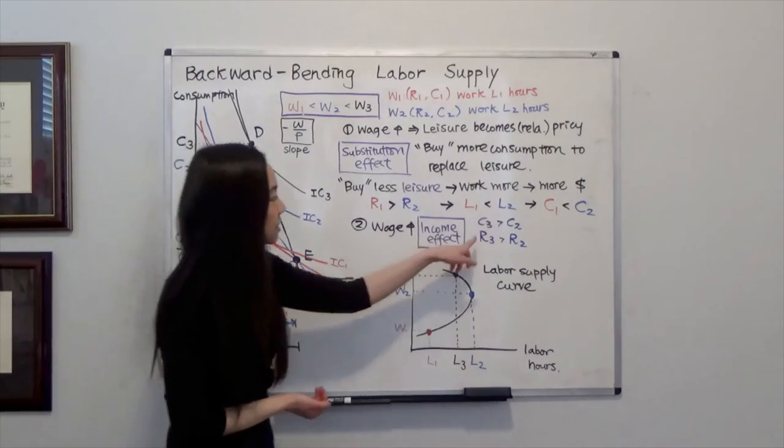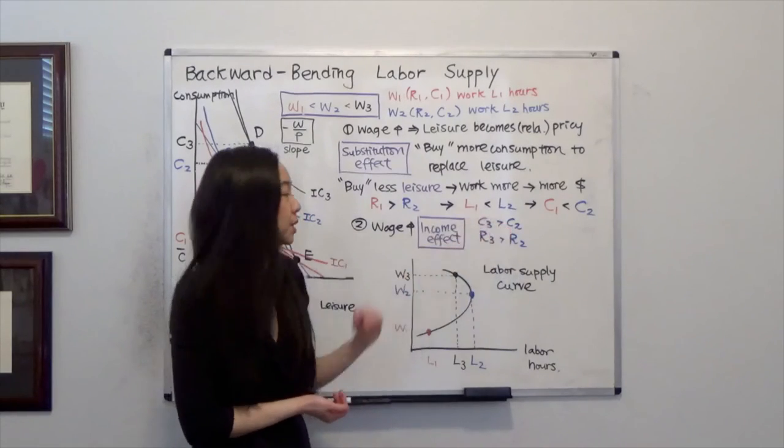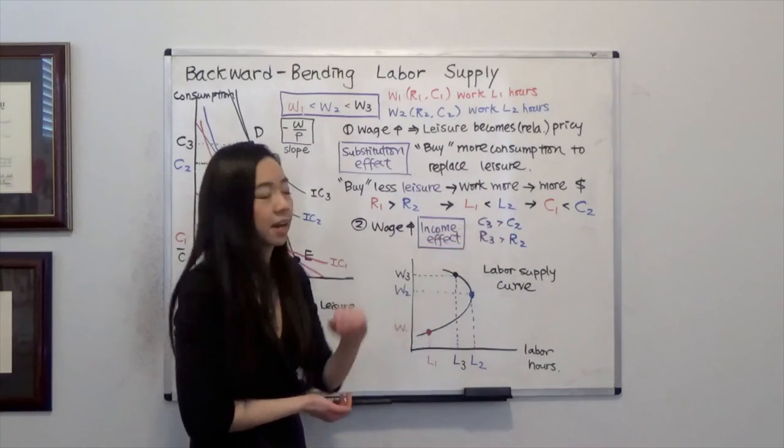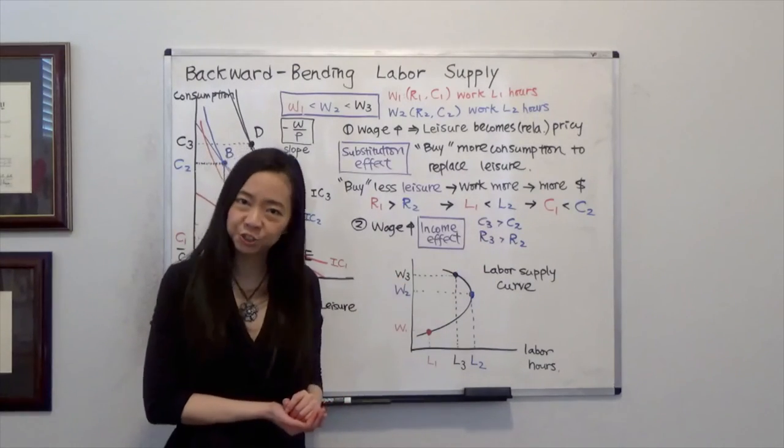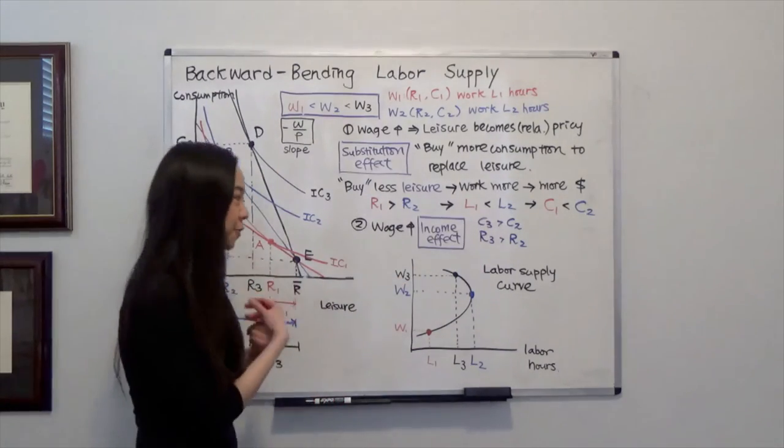So, you can see C3 is higher than C2. We have more consumption. R3 is higher than R2. We have more leisure. Now, if you have more leisure, that means the work hour will become fewer.